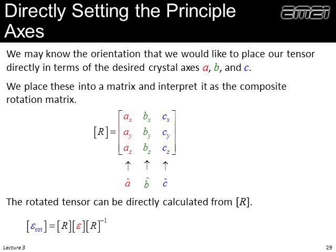Rather than figuring out rotation angles about x, y, and z separately, we can directly construct the composite rotation matrix R by placing the desired crystal axis orientations as its columns. Then pre-multiply and post-divide the diagonal tensor by R to get the rotated tensor directly — no need to decompose into individual rotation matrices.